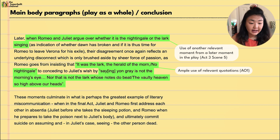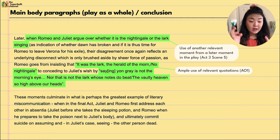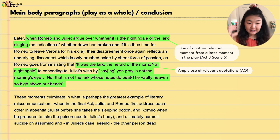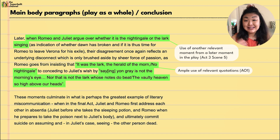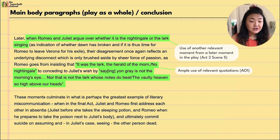These moments culminate in perhaps the greatest example of literary miscommunication: in the final act, Juliet and Romeo first address each other in absentia — Juliet before she takes the sleeping potion, and Romeo when he prepares to take poison next to Juliet's body — and ultimately each commits their fatal act on assuming or seeing the other person dead.